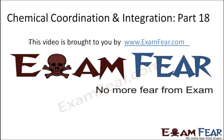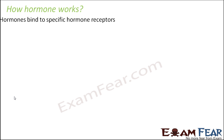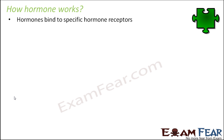Hello friends, this video on chemical coordination and integration part 18 is brought to you by examfear.com. Now that we are clear about the hormone receptors, we can very easily understand how hormones work. The first thing that they do is hormones bind to specific hormone receptors. The hormones are being carried by the blood, and whenever receptors see their hormone, they will attract and bind to them, forming a hormone-receptor complex.